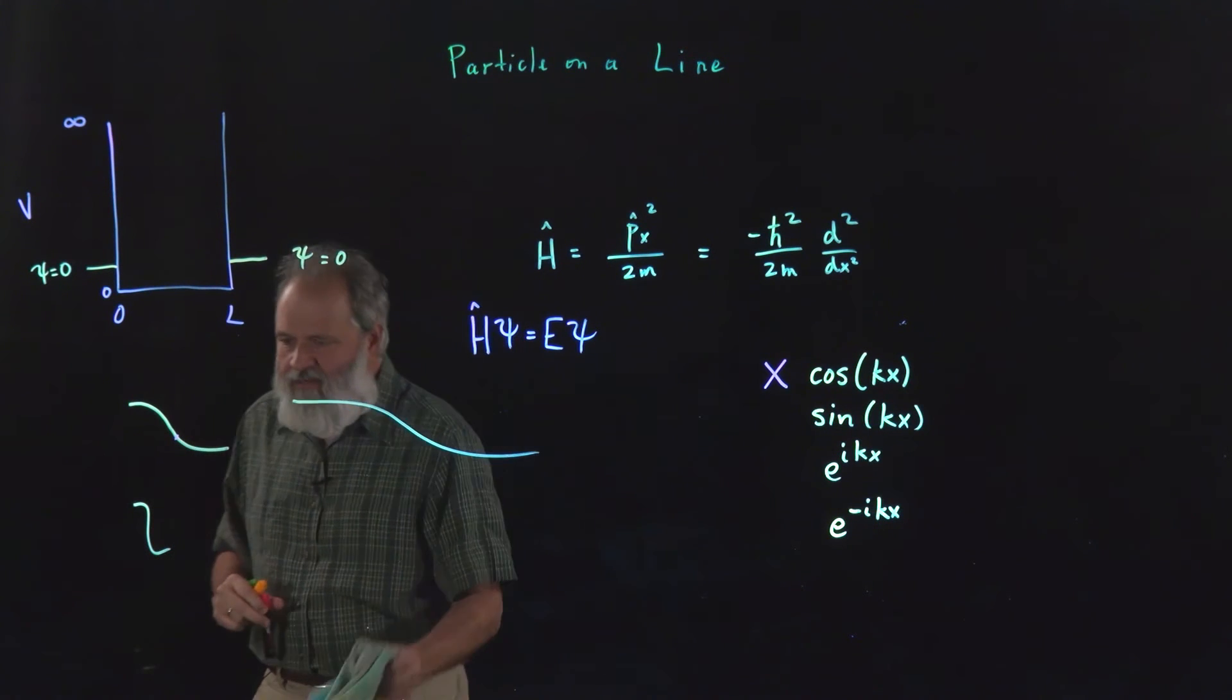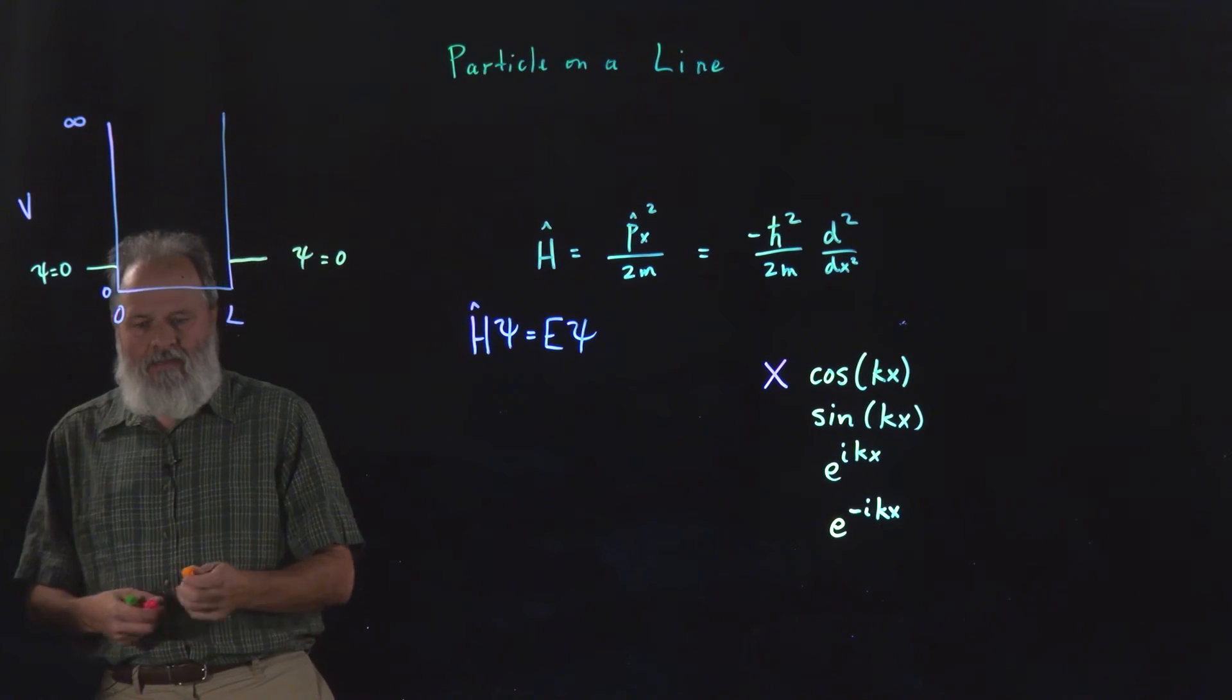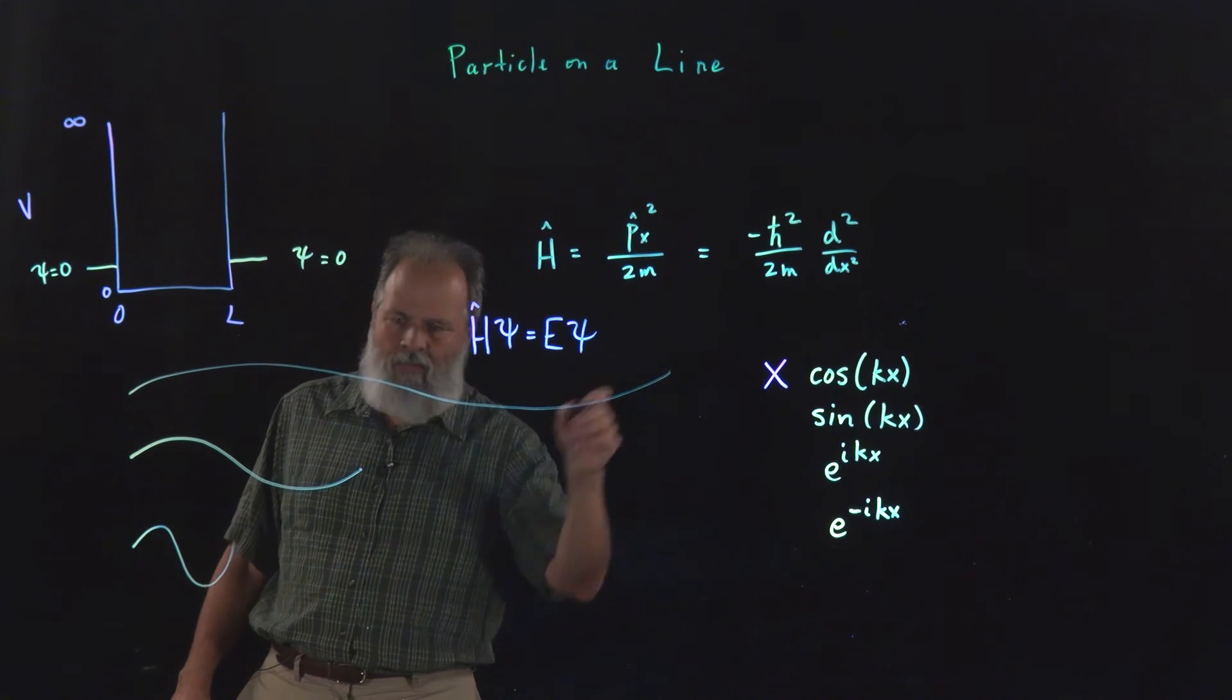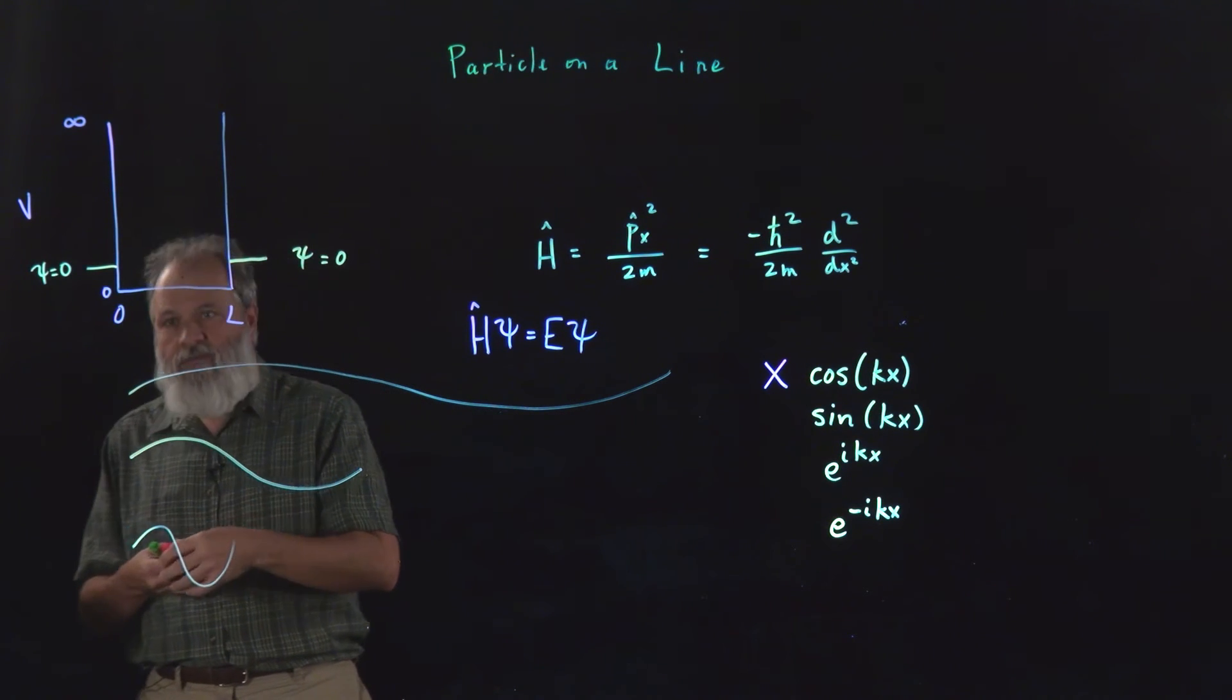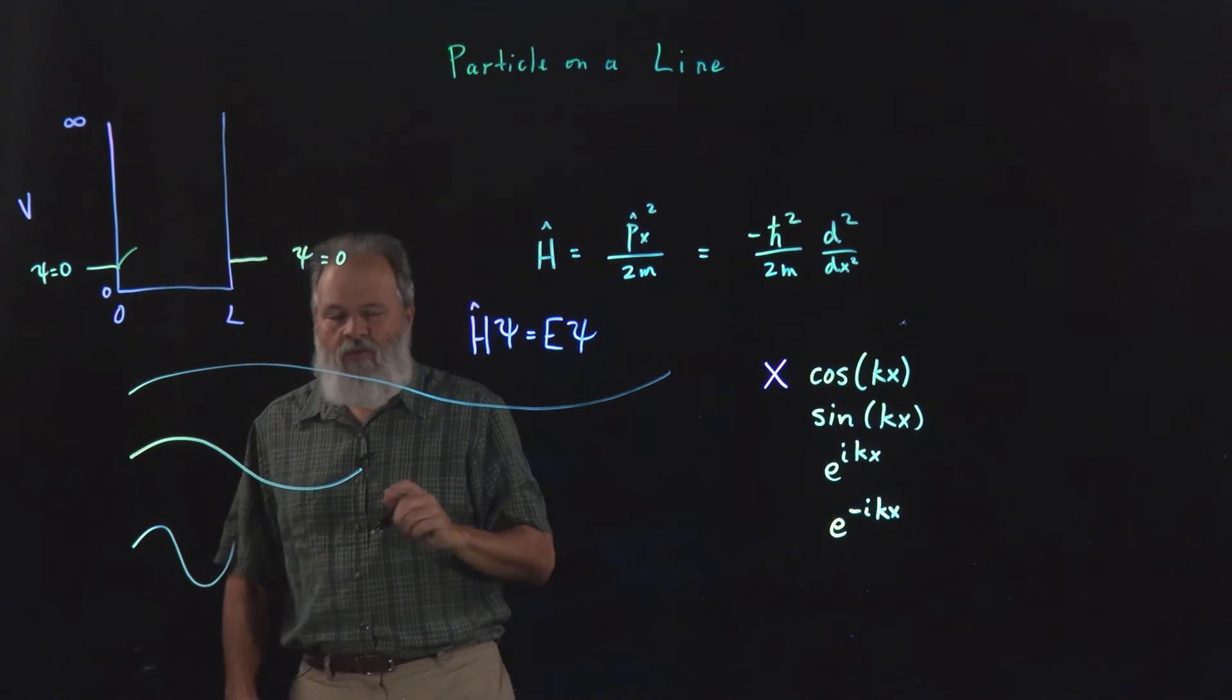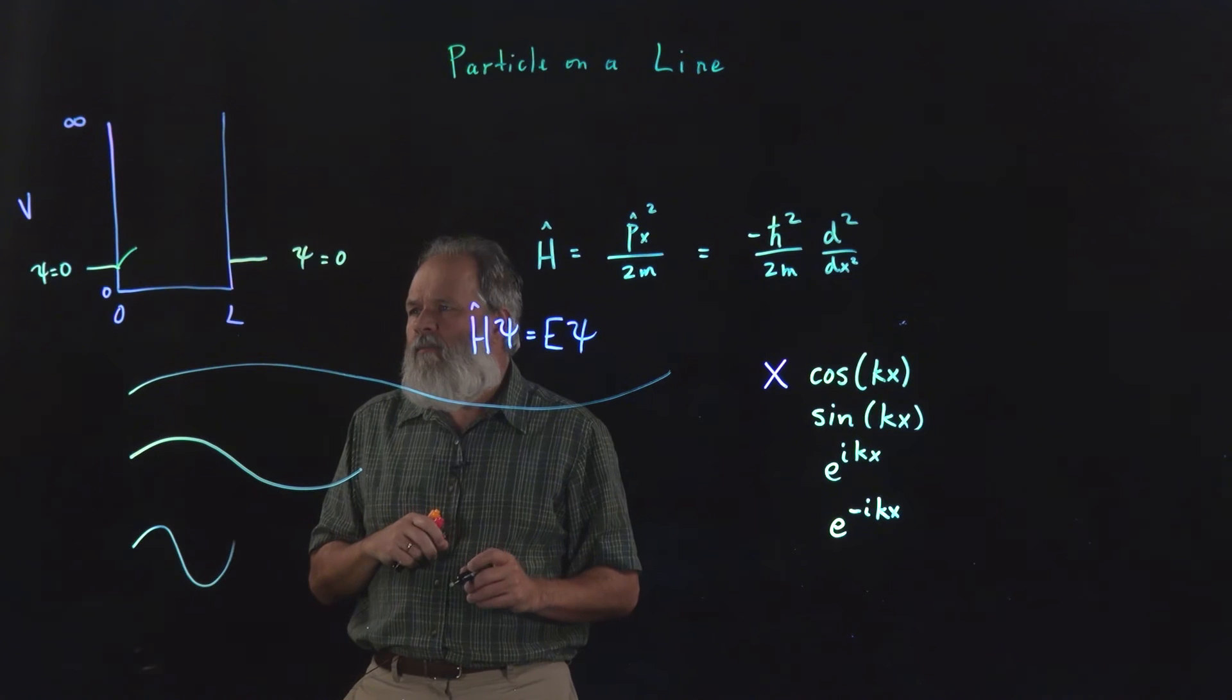What about the sine function? The sine function, the sine starts at zero. So let's draw various sine functions. Draw a long one and a short one and a really long one. Now what you can see is that certain sine functions actually do fit in here. So a sine function starts off at zero. So we can make it match the wave function. One of the conditions on a wave function is it should be continuous. And in most cases, you don't like cusps. However, this is one of the exceptions.